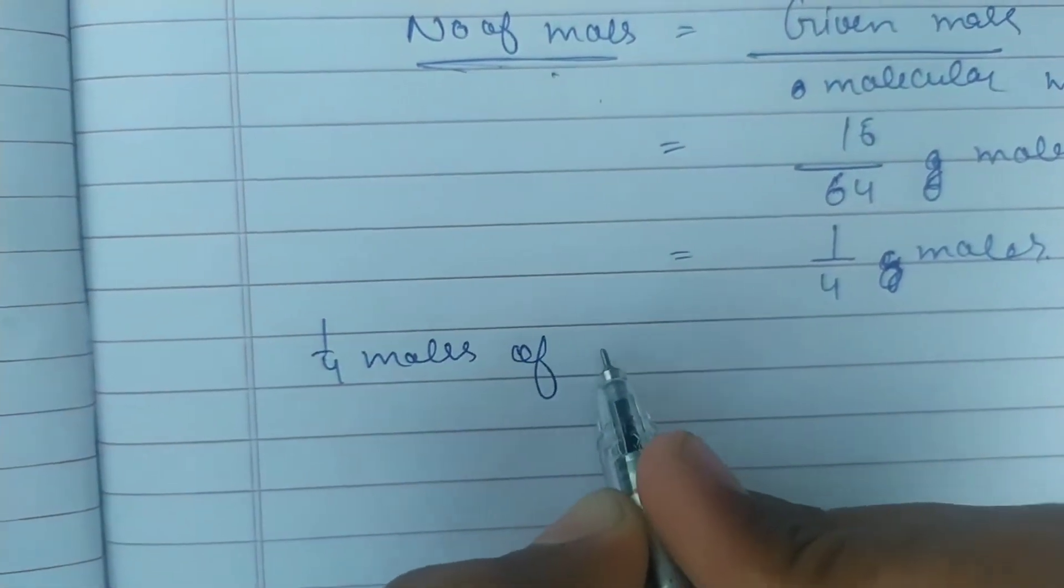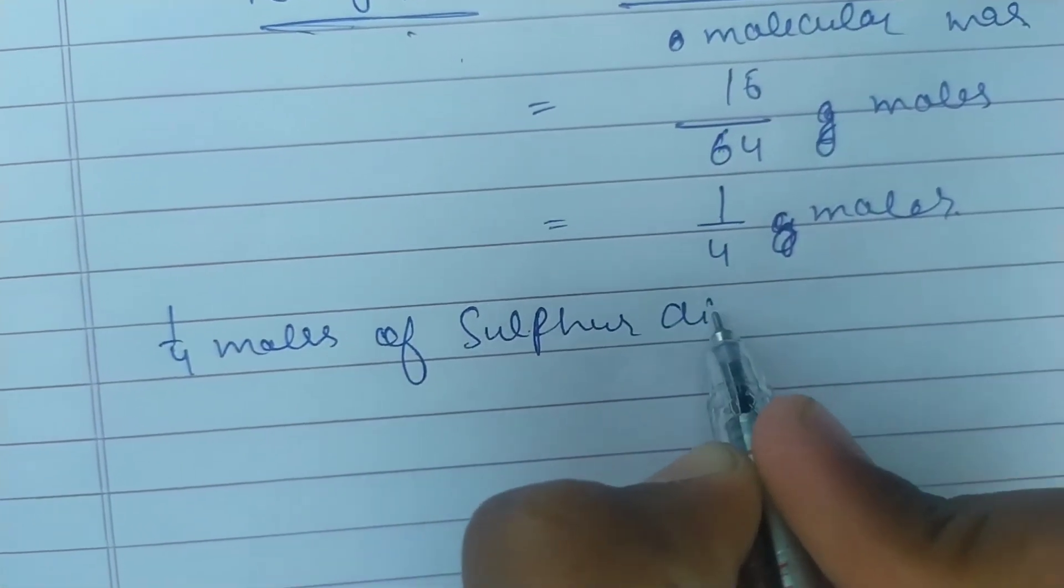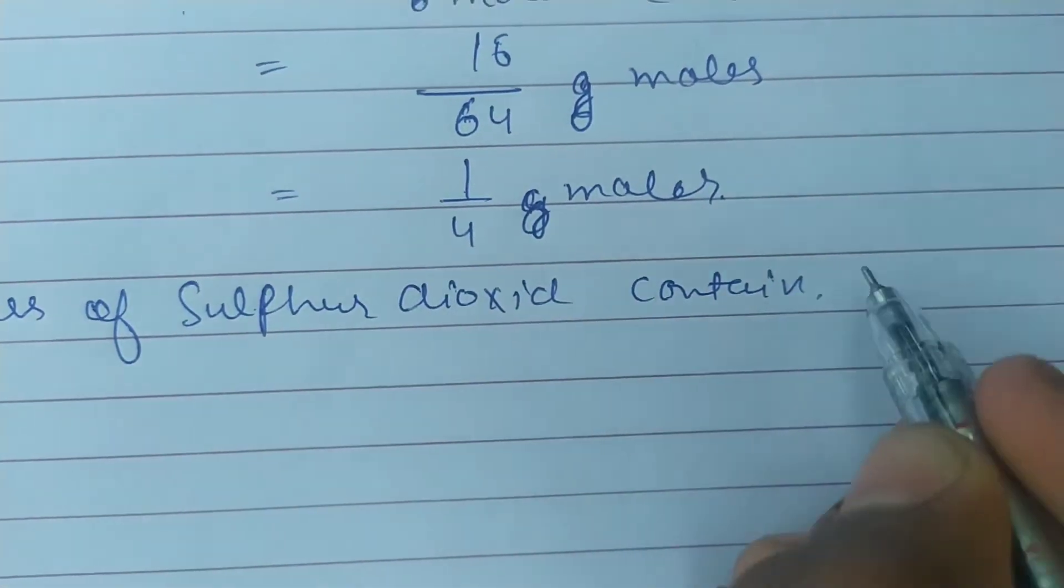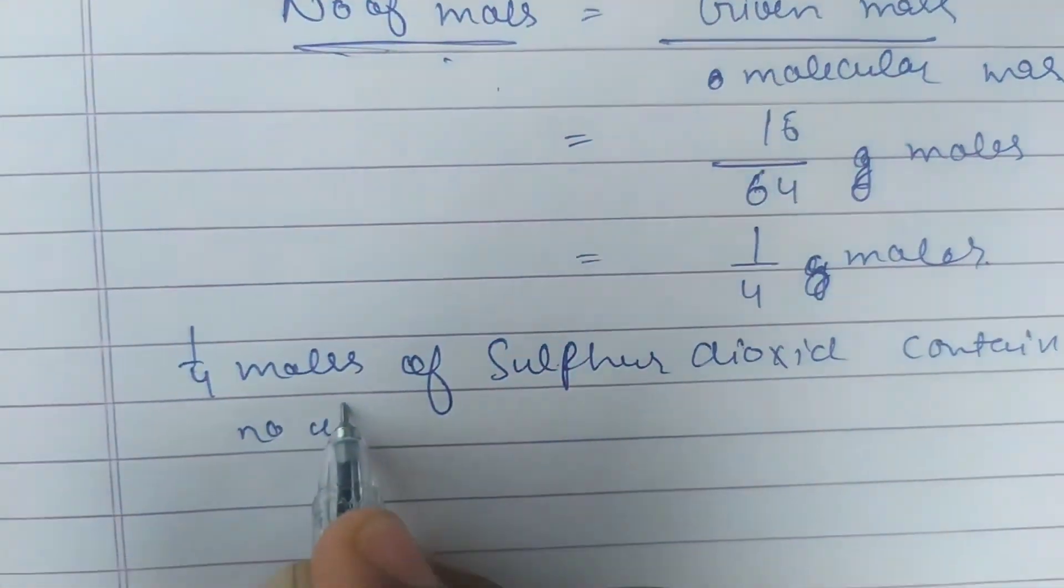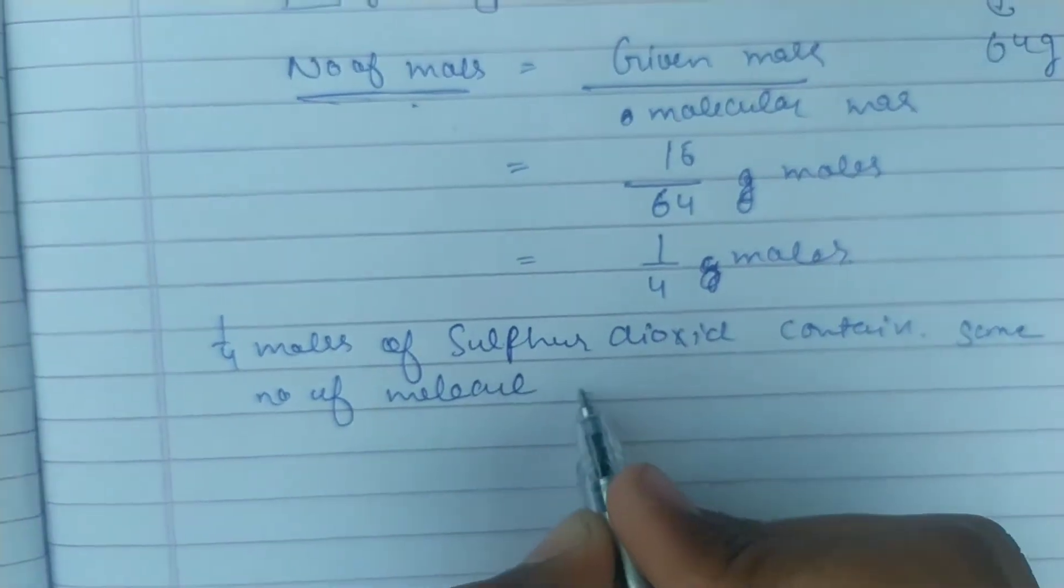1 upon 4 moles of sulfur dioxide gas contains the same number of molecules as 1 upon 4 moles of oxygen.